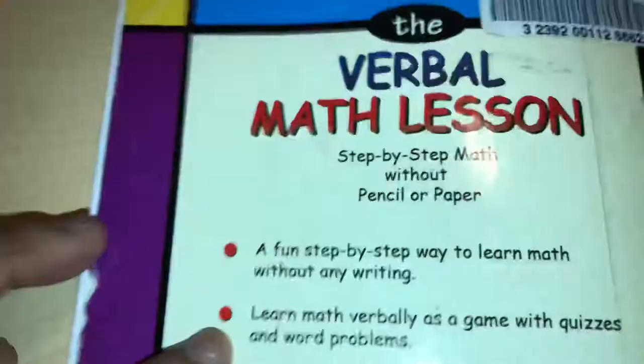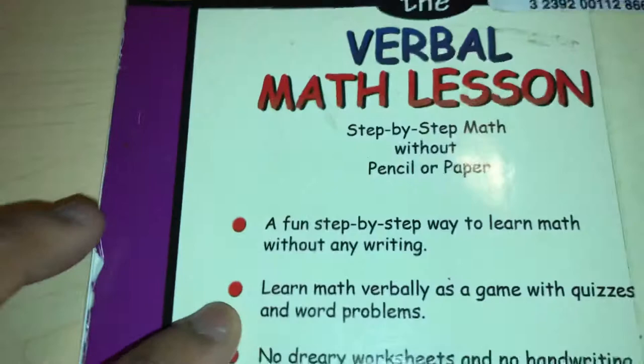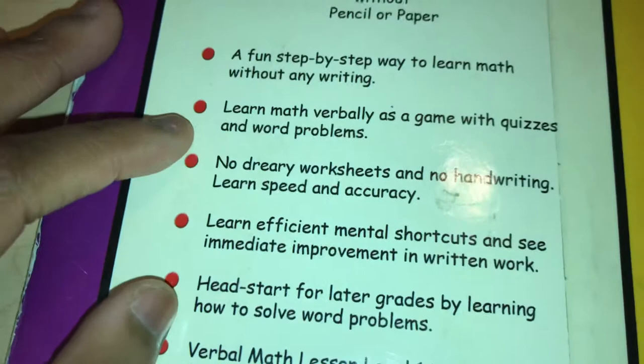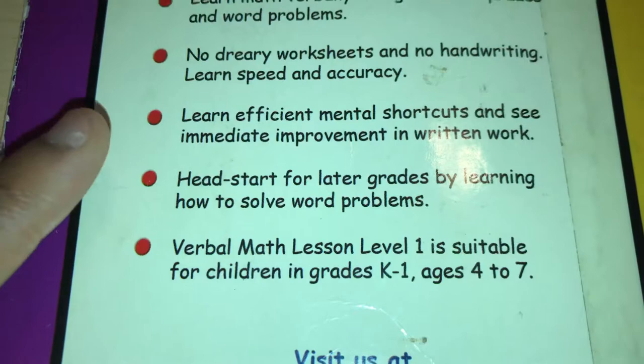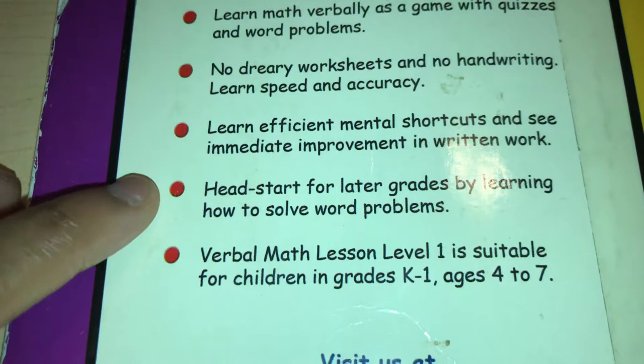In the back here it is: A fun step-by-step way to learn math without any writing. Learn math verbally as a game with quizzes and word problems. No dreary worksheets and no handwriting. Learn speed and accuracy, learn efficient mental shortcuts, and see immediate improvement in written work. Head start for later grades by learning how to solve word problems. Verbal Math Lesson Level 1 is suitable for children grade 1 to K, age 4 to 7.